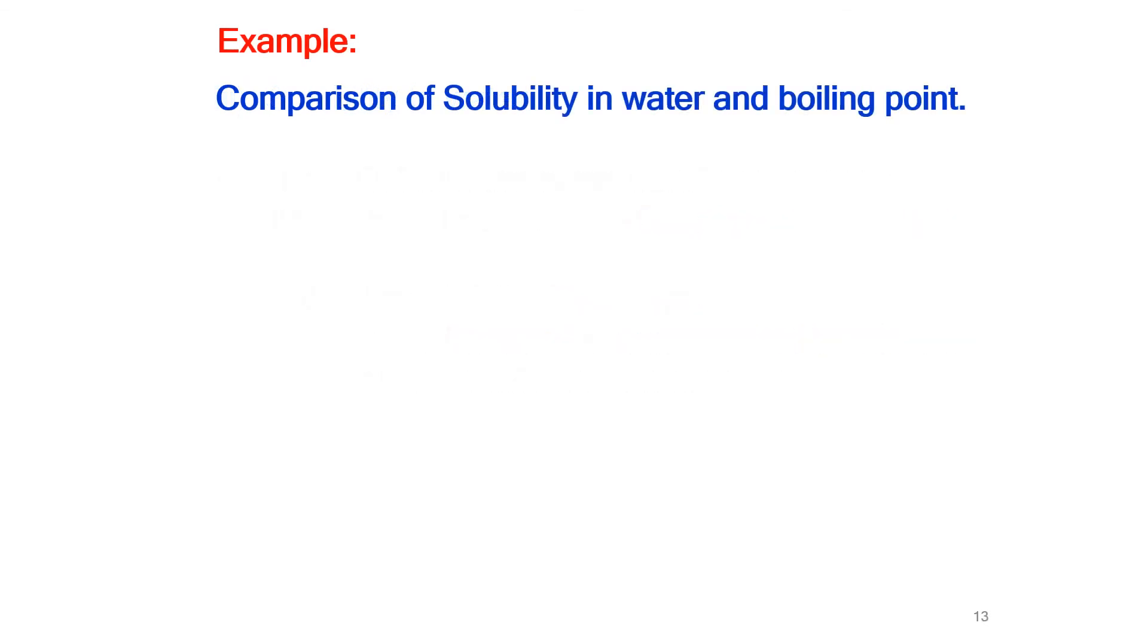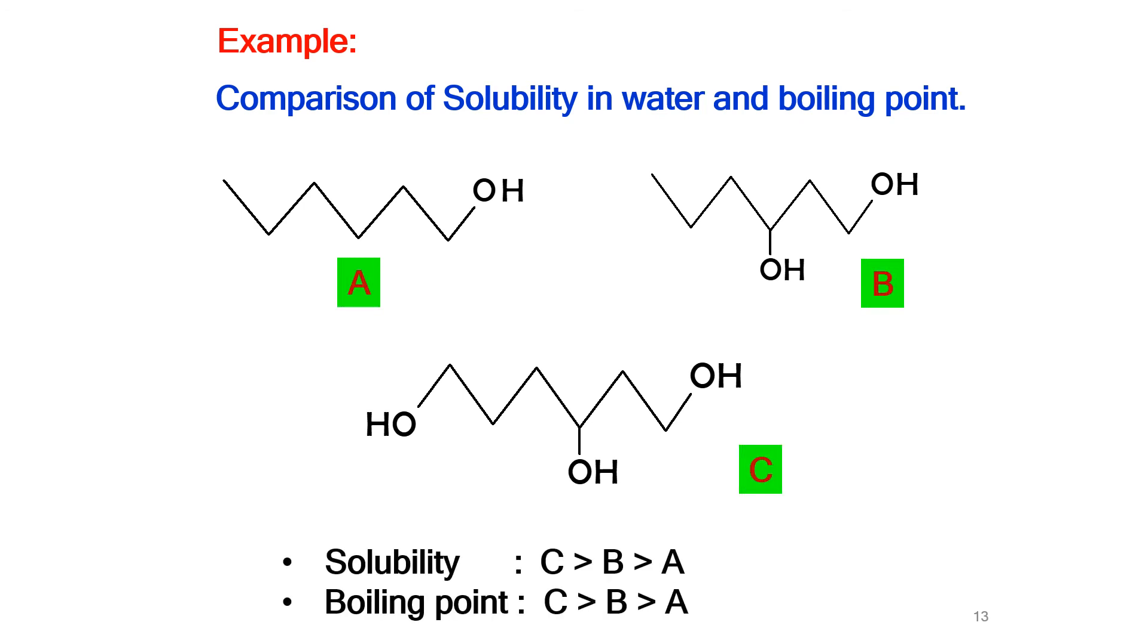Here are three examples of alcohol which has the same number of carbon but have different number of OH group. Compound C which has the most number of OH group has the highest solubility and also has the highest boiling point.